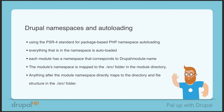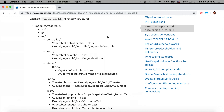Each module has a namespace that corresponds to Drupal slash module name — this is the namespace by default. The module's namespace is mapped to the src folder in the module directory, and anything after the module namespace directly maps to the directory and file structure in the src folder.